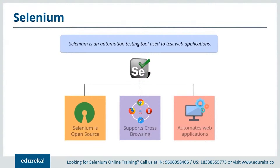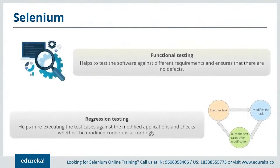Selenium is free of cost — the user does not have to pay for any of the versions of this tool. The latest version available in the market is Selenium 3.1. To get end-to-end guidance on how to set up Selenium on your system, refer to the link in the description of this video. Selenium is highly flexible when it comes to functional and regression testing. Functional testing ensures there are no defects against business requirements, and regression testing helps re-execute tests against the modified application.